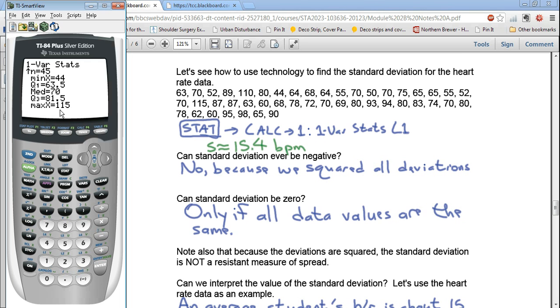So the 1 var stats on the calculator, again, gives you, for your purposes, what you need from it. It gives you the mean, the standard deviation, the sample size, and the five-number summary, which includes the median. That should be enough for this video. In the next video, we'll look at using the calculator to create a box plot. And that should wrap it up for the videos for Module 2.